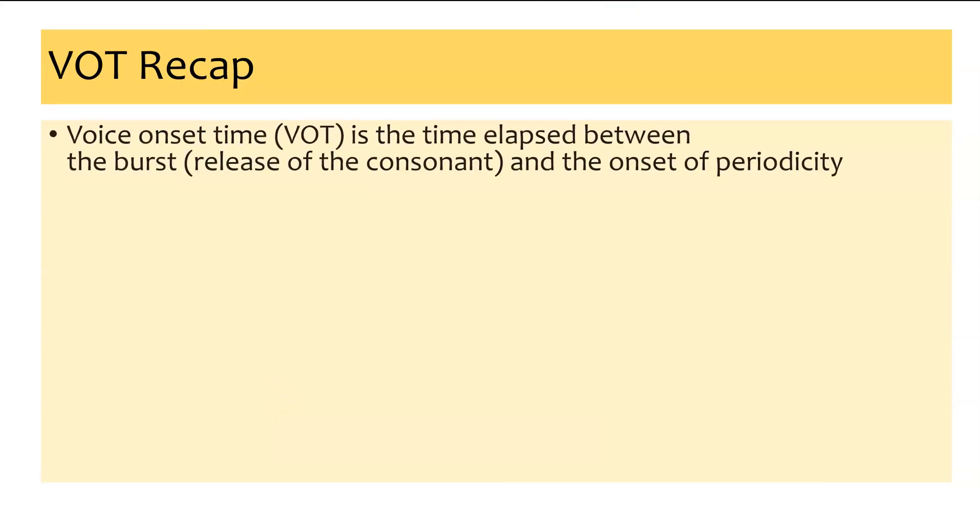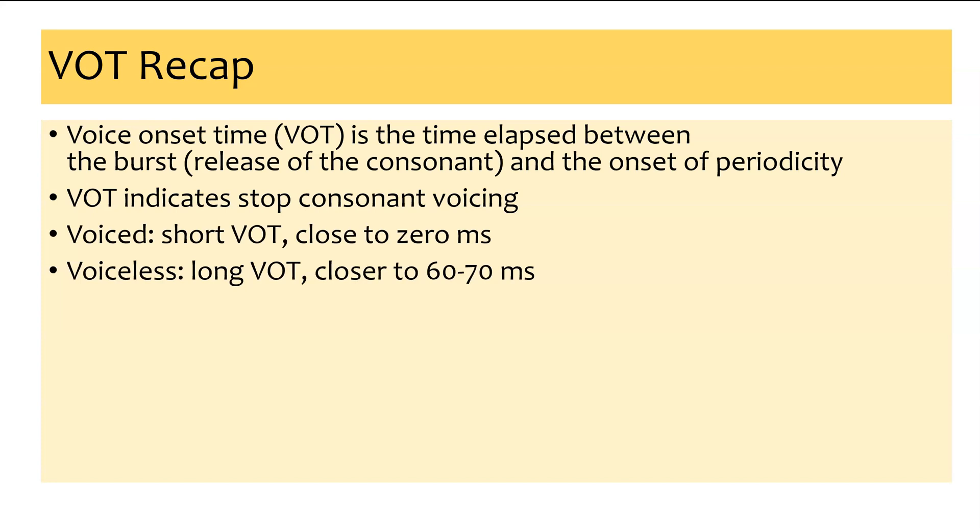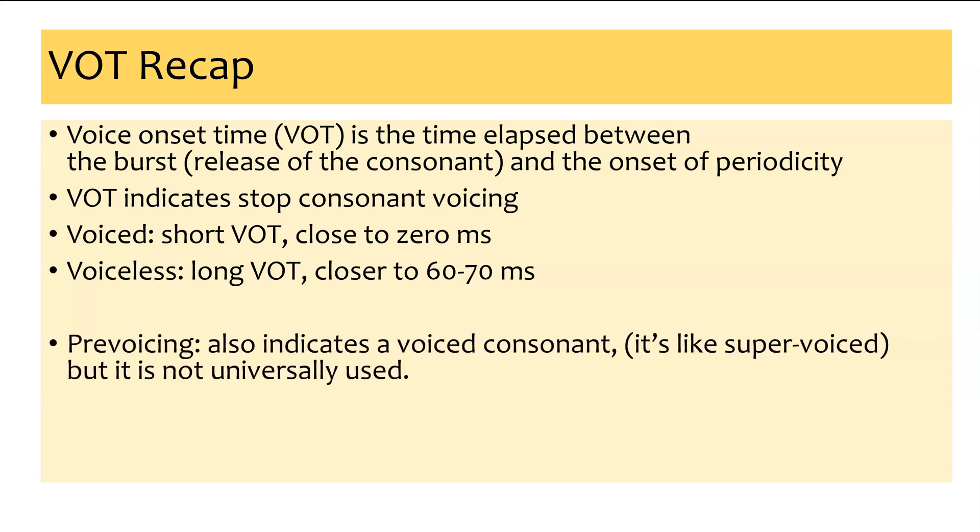So to recap what we've talked about today, voice onset time is the time elapsed between the burst or the release of the consonant and the onset of periodicity. It indicates stop consonant voicing, with voiced stop sounds having a short VOT close to 0 ms, or at least below 30, and voiceless consonants having a longer VOT closer to 60-70 ms. We can also observe prevoicing, which would also indicate a voiced consonant, but it's not universally used, especially in English. So your goal for this class is to be able to recognize VOT on a waveform and know what that feature corresponds to.